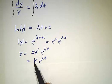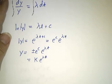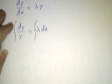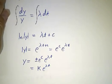So our solution is y = K e^(lambda t). And that's the general form. The general solution to this equation is an arbitrary constant times e^(lambda t).